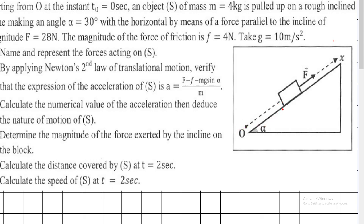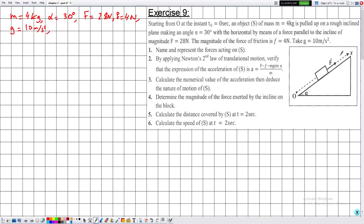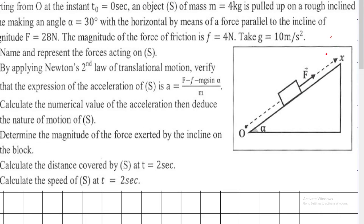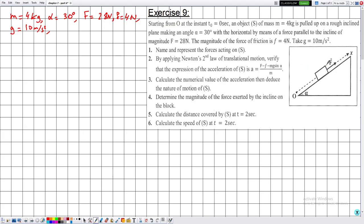We expect solid S to fall due to gravity, but there is another force opposing the weight and friction, which is capital F. We take the positive x direction to be upward along the inclined plane because this is the direction of motion. We always take the positive direction of the x axis in the direction of motion, which eliminates the variable along the y axis.